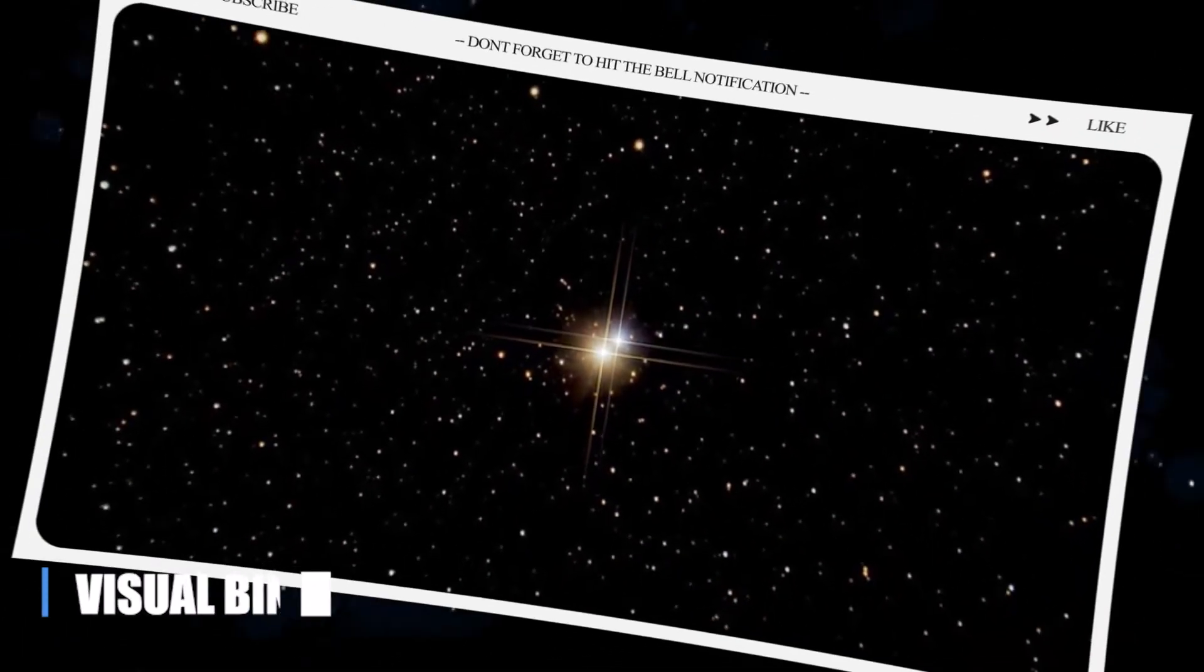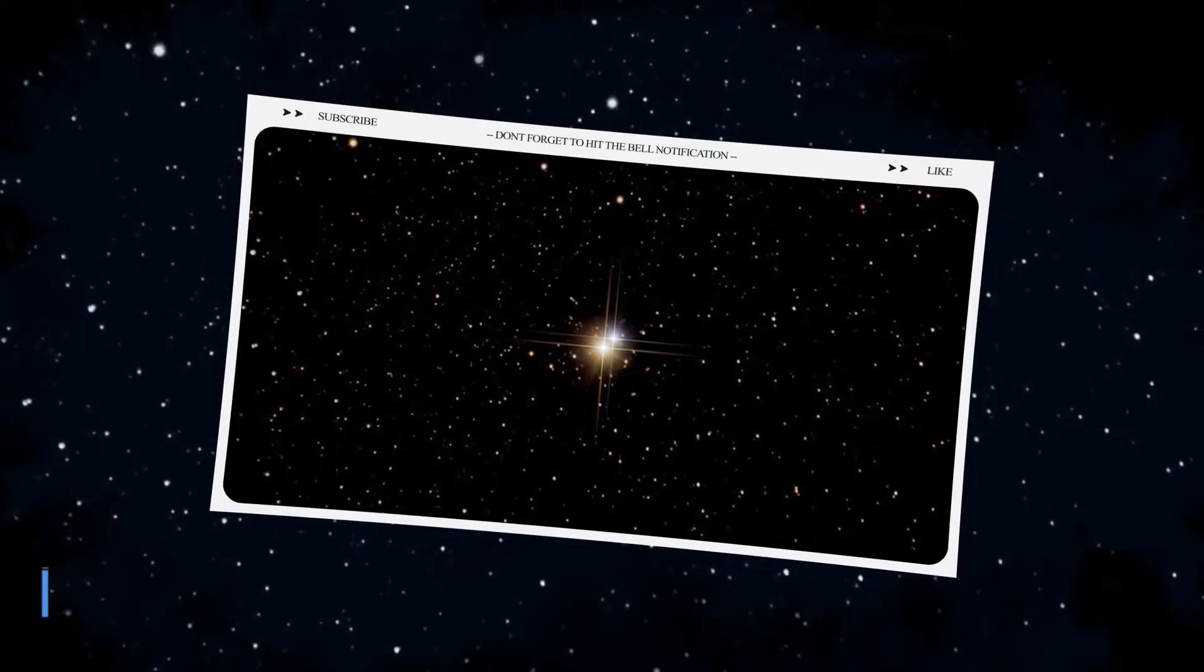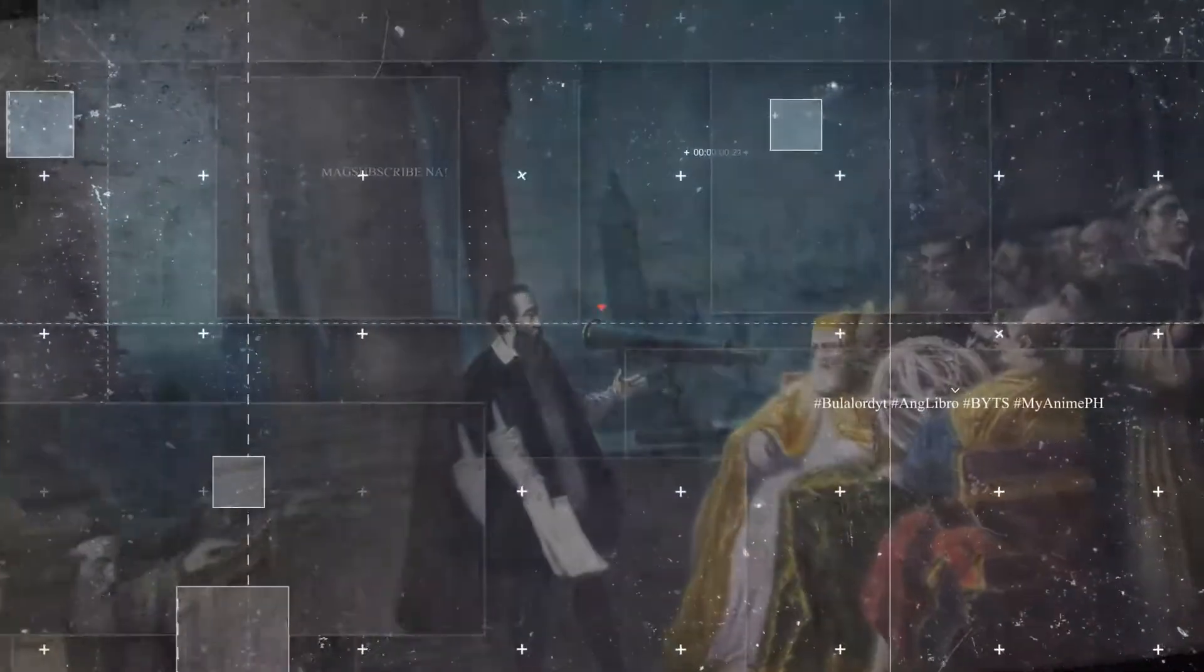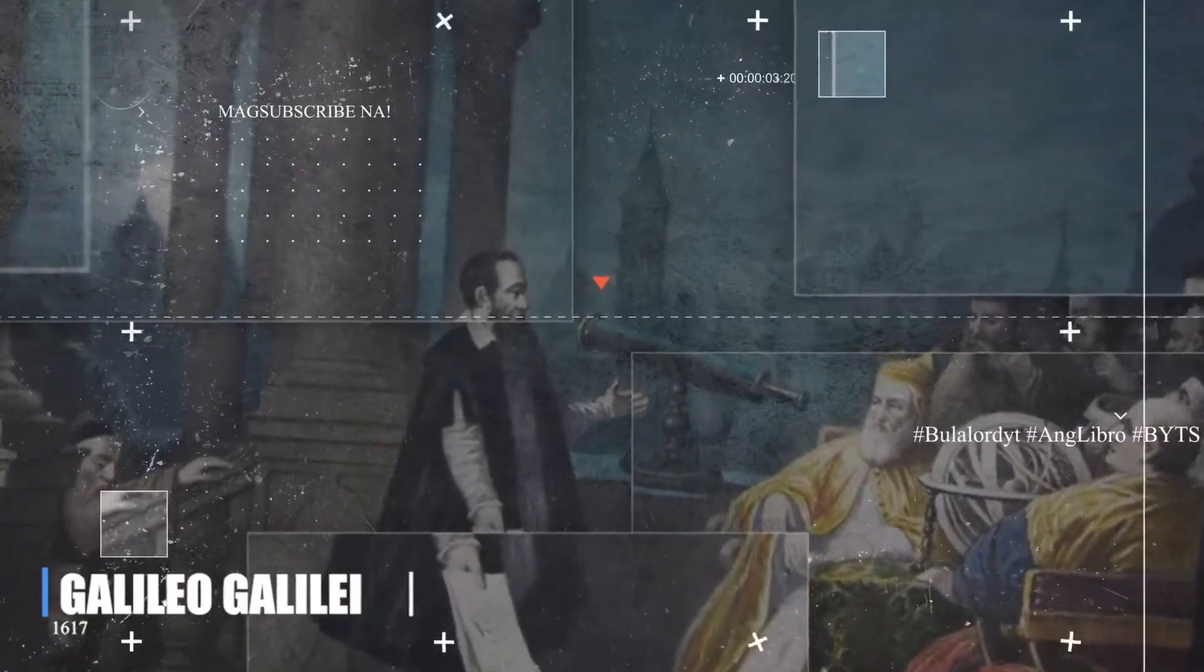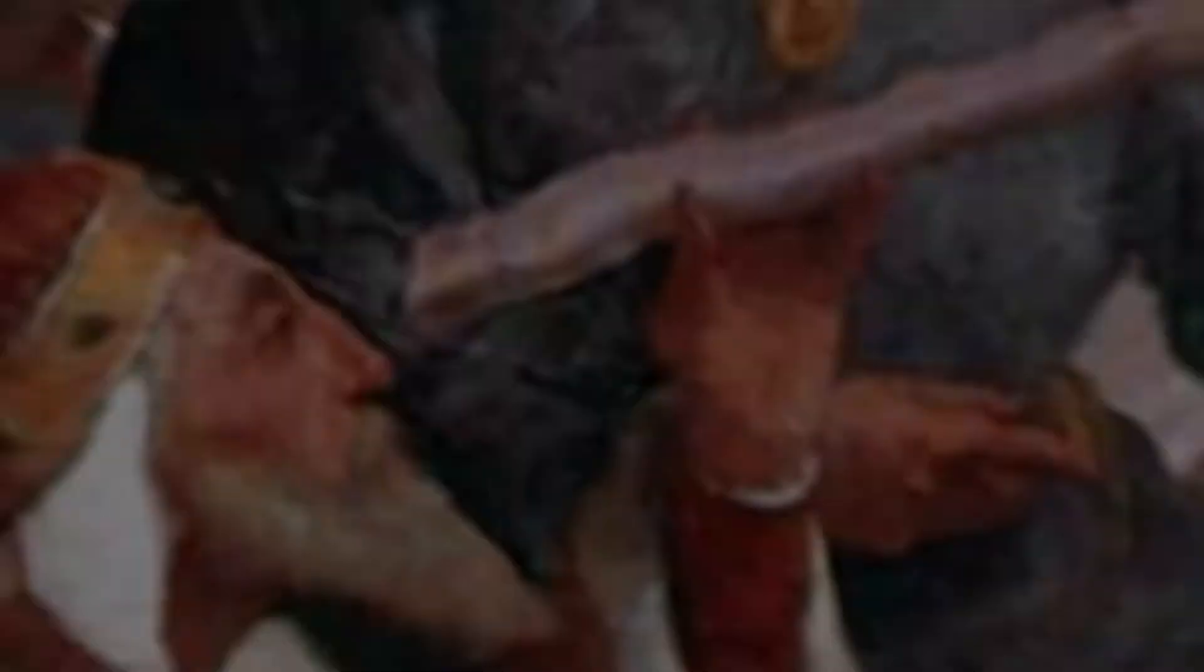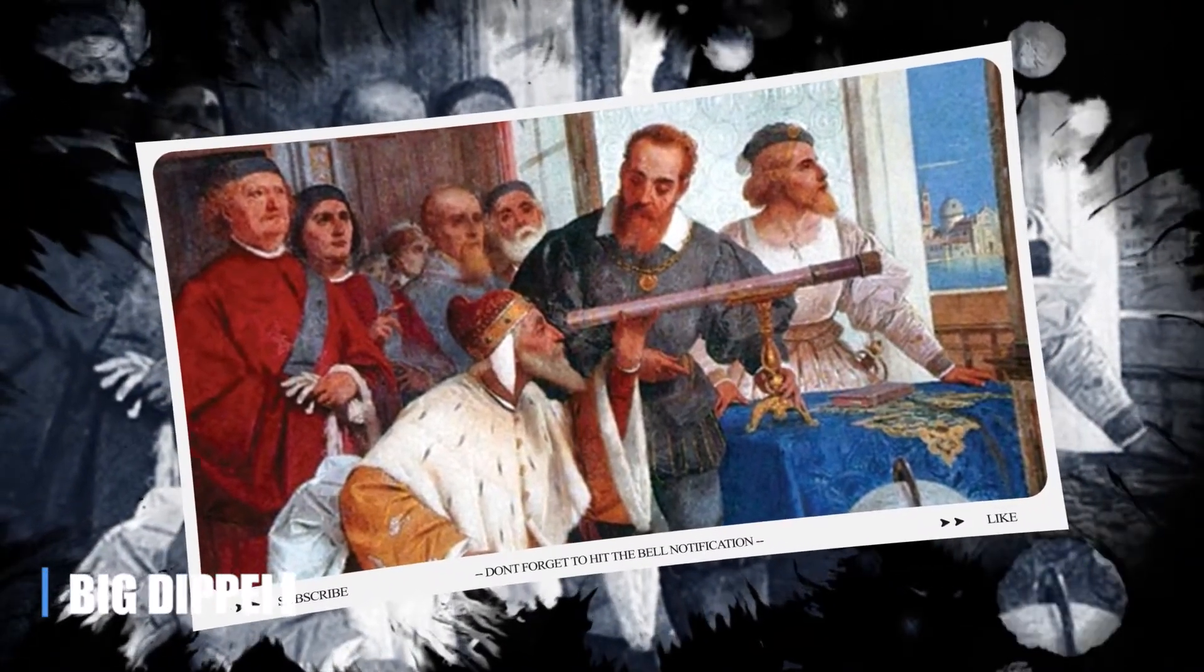The first discovery of a binary star was a visual binary. We will go into more detail on this in the upcoming section. In 1617, at the request of a fellow scientist, Galileo Galilei had the opportunity to observe them. With the help of his telescope, he directed his attention to the second star of the Big Dipper.